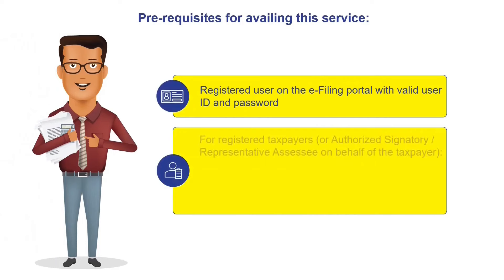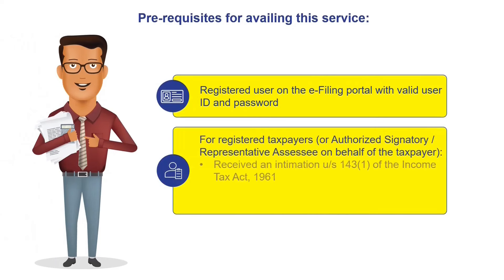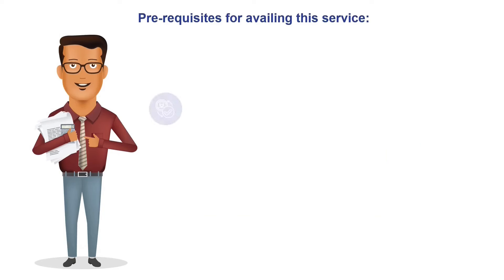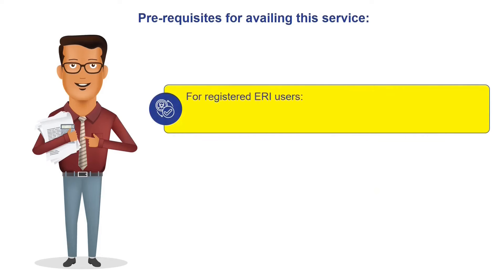You must have received an intimation under Section 143(1) of the Income Tax Act. If the rectification is required to be filed by an ERI, then the taxpayer must have added the ERI using the 'My ERI' service. For registered ERI users, they must have added the taxpayer as a client using the 'Add Client' service, and the status of ERI should be active.